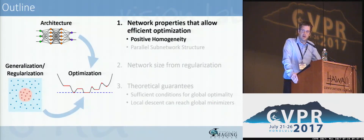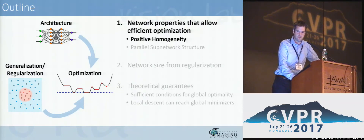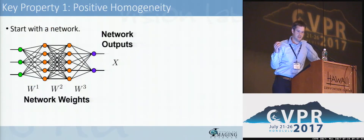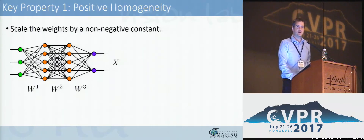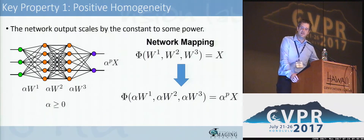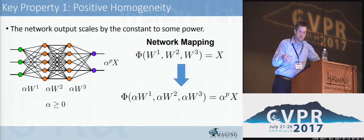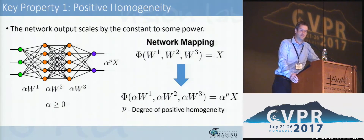To begin, we'll describe network properties that allow this framework to be developed and that allow for efficient optimization. The first important property is positive homogeneity. All it really means is: if you start with a network with some weights W1, W2, WN3 producing some output X, and you scale all the weights by some non-negative constant alpha, then the output of your network scales by that same constant raised to some power. We define the network mapping from weights into output as capital phi, and we want this phi function to satisfy this positive homogeneity property. The power P that we raise alpha to in the output is the degree of positive homogeneity.